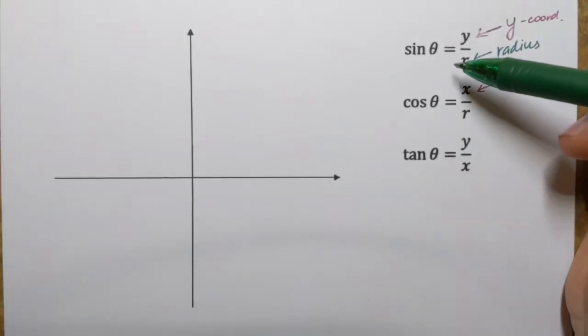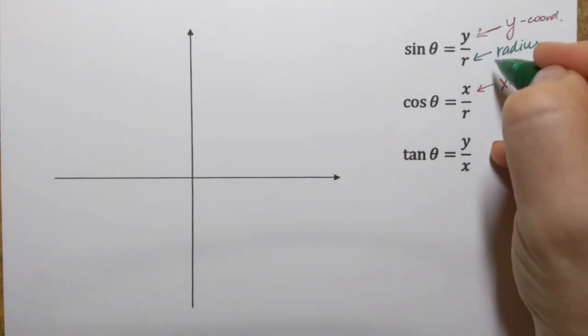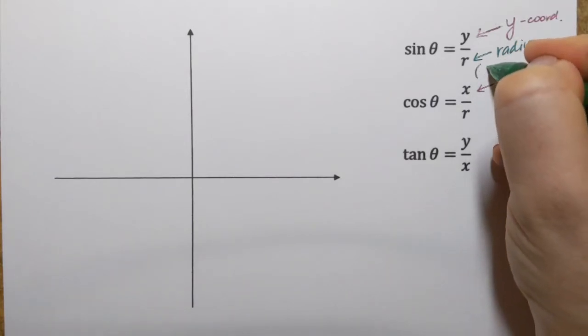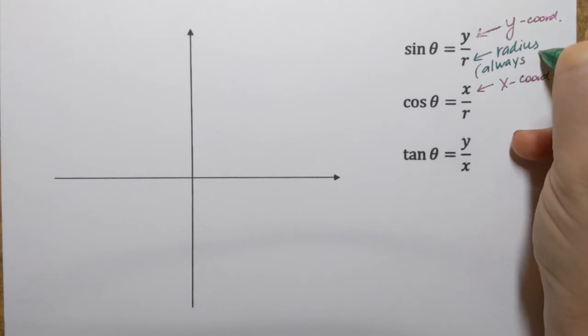So what do we know about r? Well, we know that the radius is always positive. That's important — always positive.